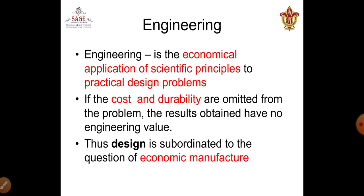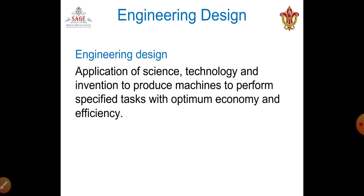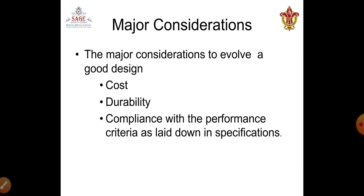Engineering involves economical analysis. When scientific principles are combined with the economics of a problem, it gets its engineering value. If you omit the aspects of cost and durability from the design, it has no engineering value. So design is subordinated to the question of economic manufacturing. Engineering design, by definition, is an application of science, technology, and invention to produce machines that perform specified tasks with optimum economy and efficiency. The major considerations in a good design are: first, cost; second, durability; and third, compliance with the performance criteria as laid down in the specifications.